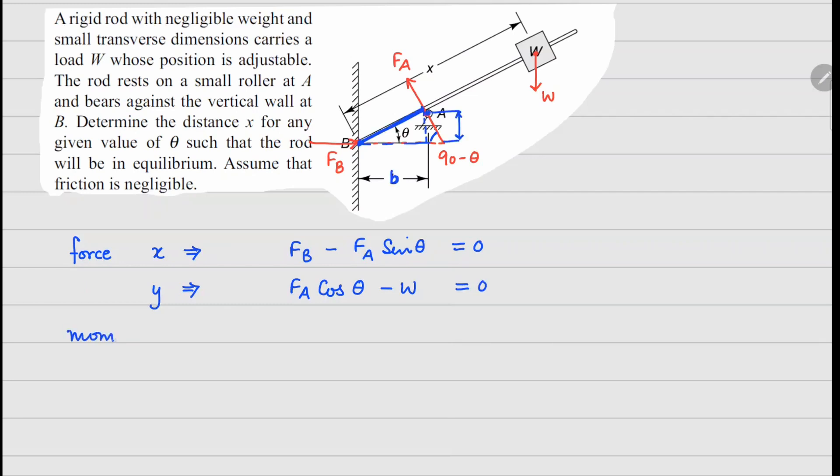Now for the moment balance, let's do it about point B. We're going to have FA times this distance right here. Let's call this x1, and you can see that x1 cos theta equals B.